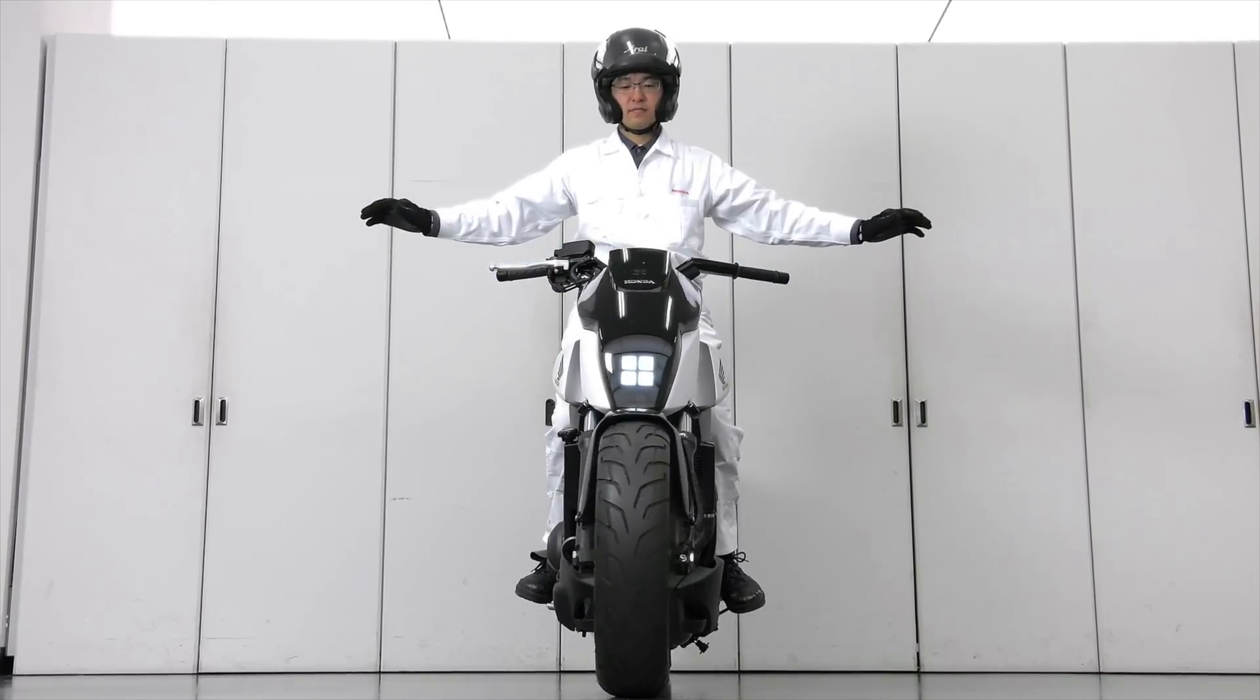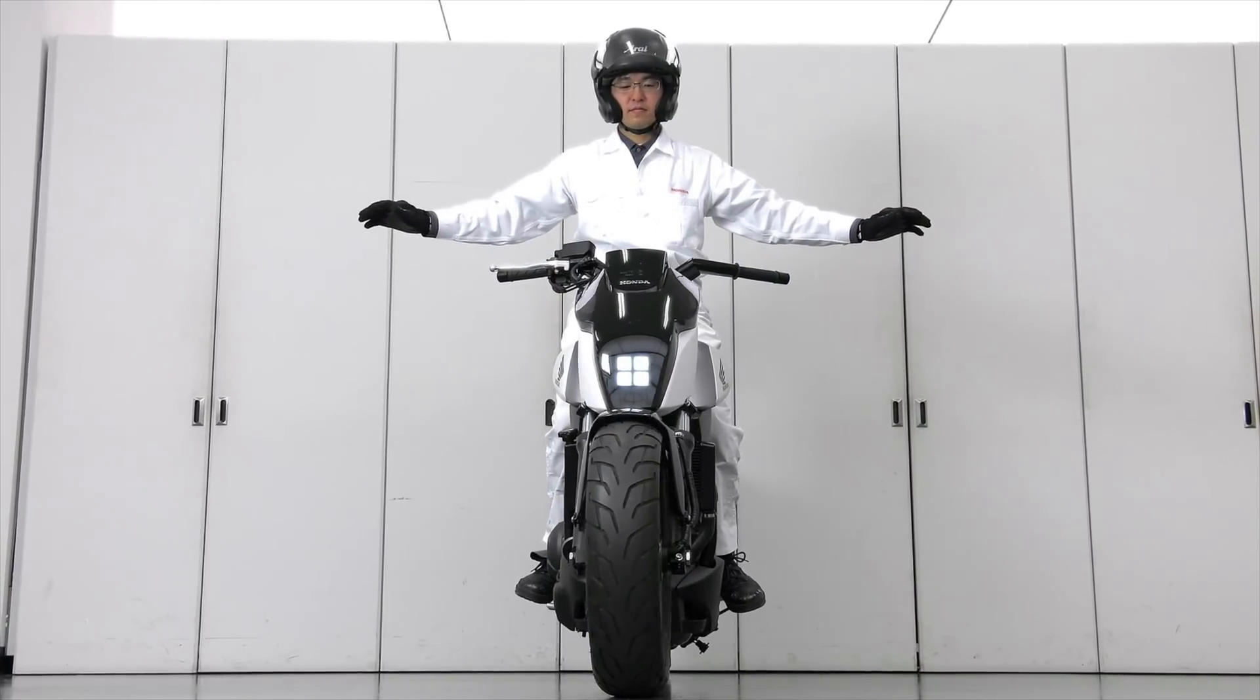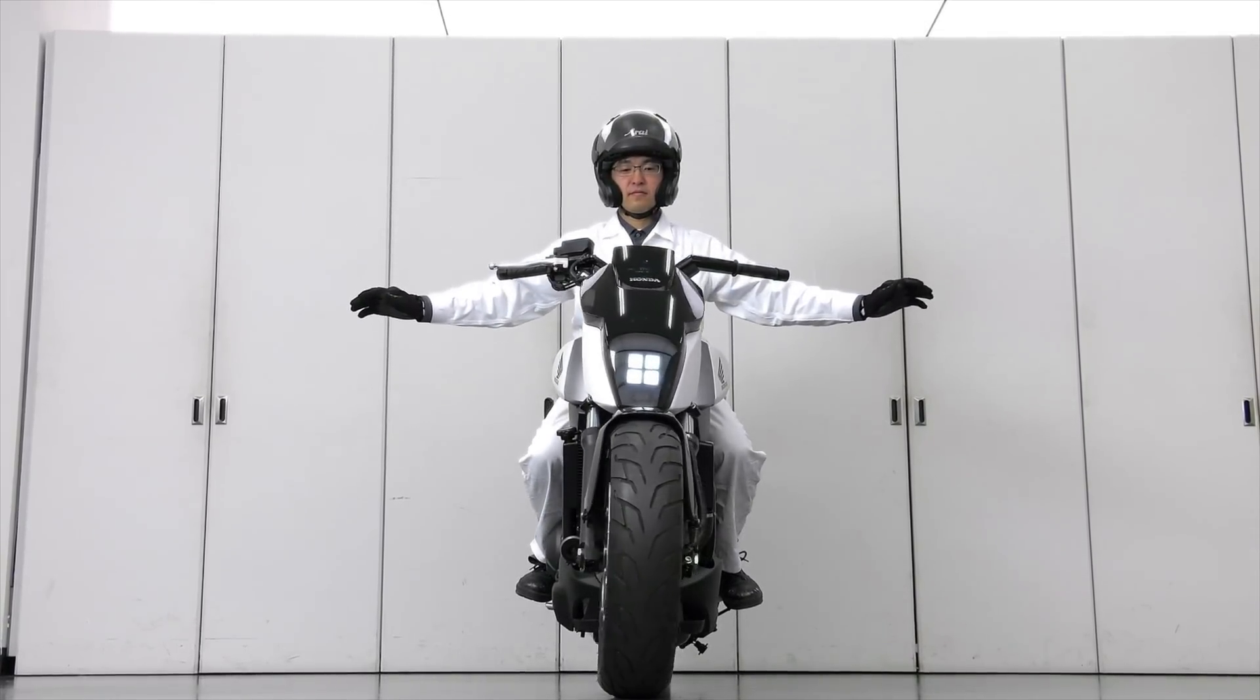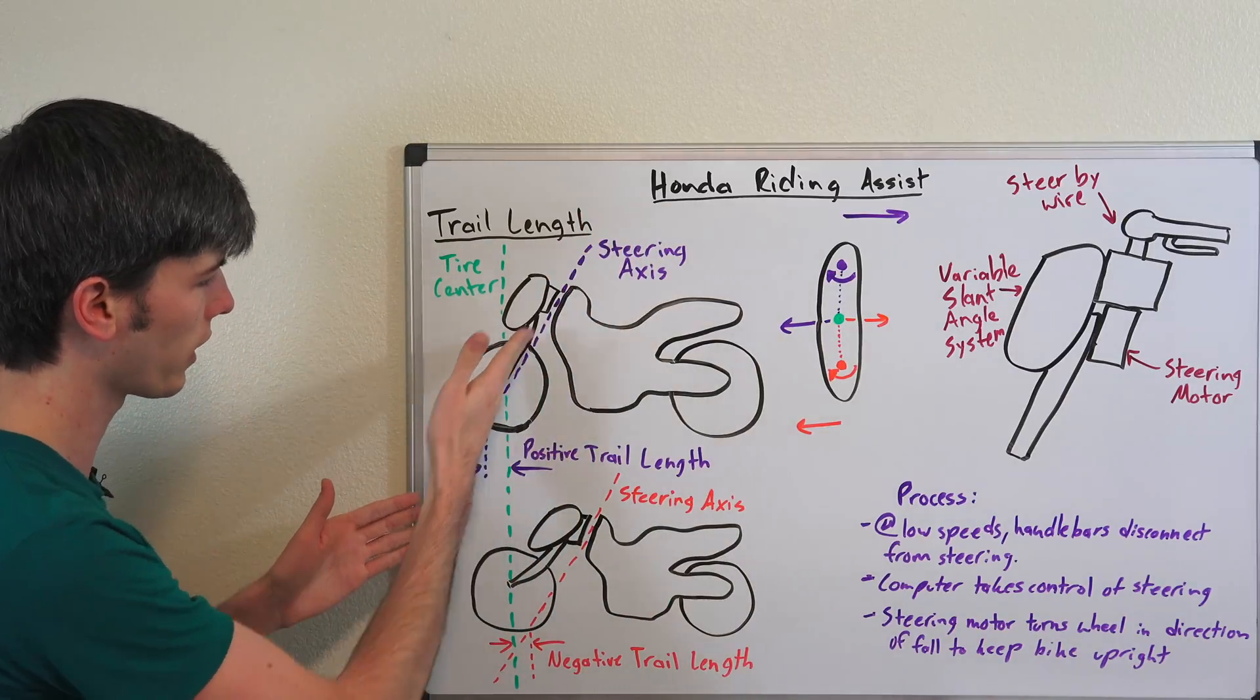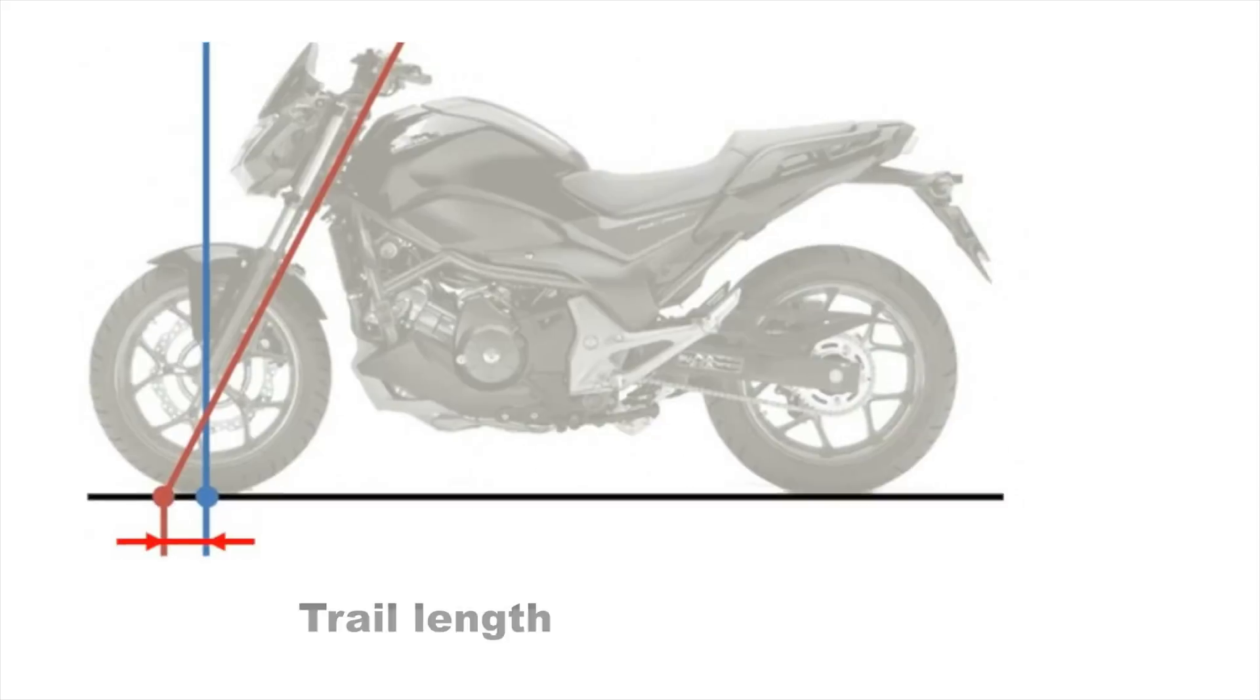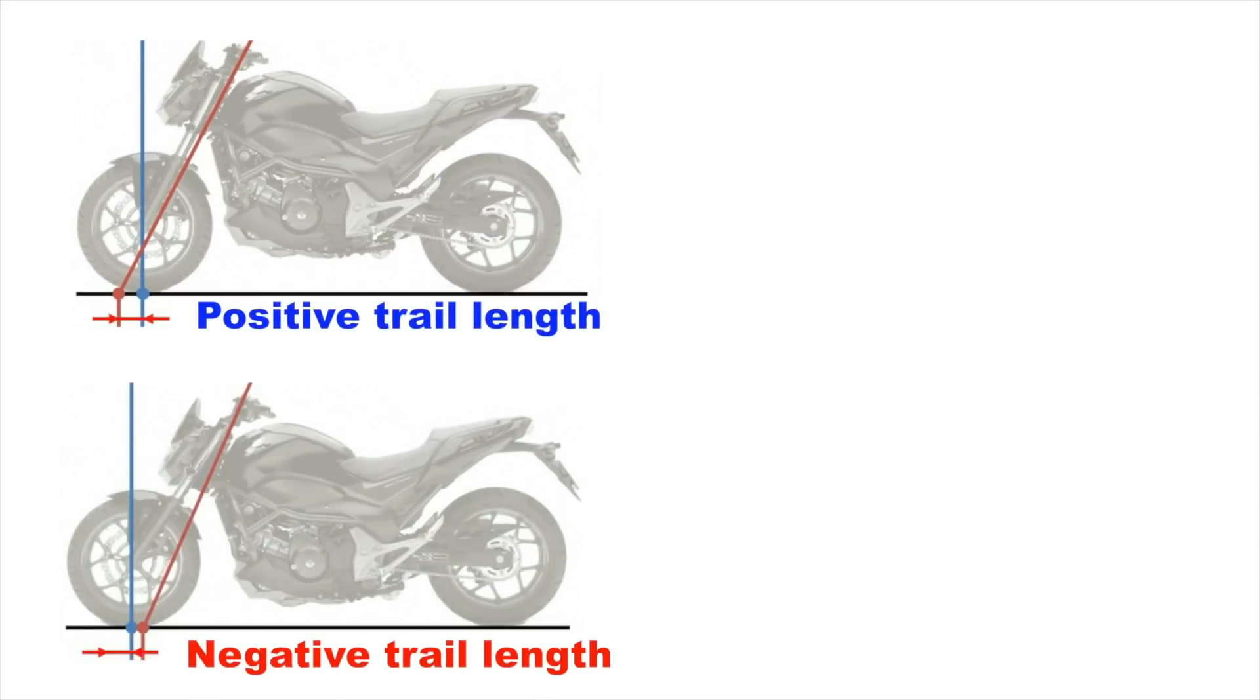In order to understand how this technology works, we need to talk about trail length. There's positive trail length, where the steering axis on the bike lies ahead of where the center of the tire is. This is good for sporty riding and pretty much any riding at speed.